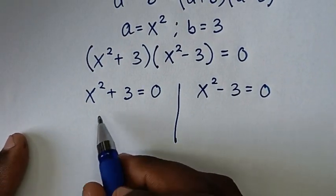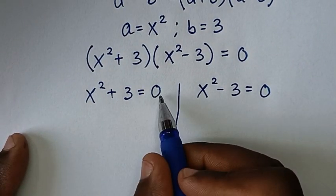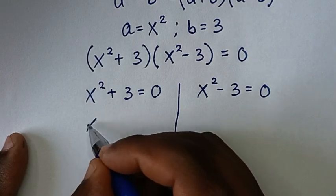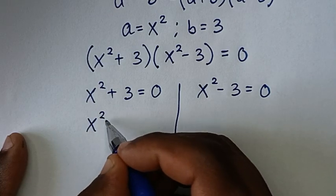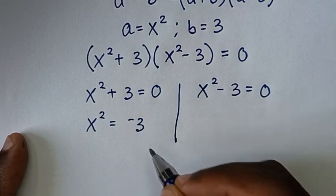From the first solution, we take 3 to the right side, so it will be x² is equal to negative 3.